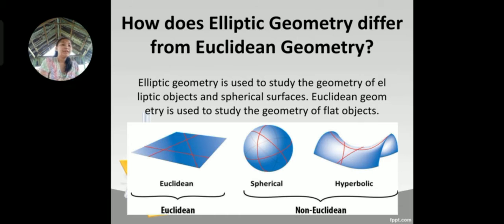So how does elliptic geometry differ from Euclidean geometry? Elliptic geometry is used to study the geometry of elliptic objects and spherical surfaces. Euclidean geometry is used to study the geometry of flat objects. You see in the first picture or image, it is flat, that's why it is considered Euclidean. The second and third, which is spherical and hyperbolic, are considered non-Euclidean. So that would be all in my part.